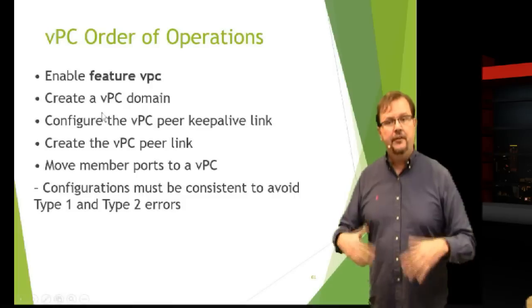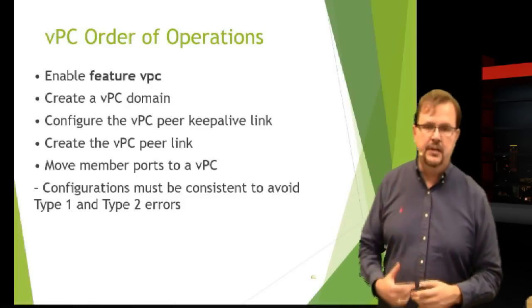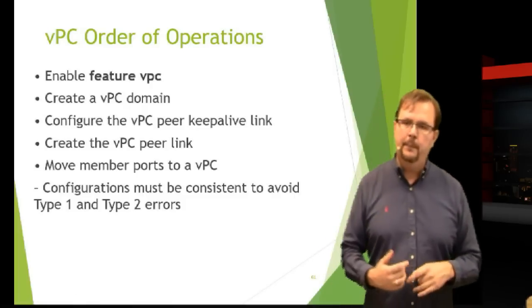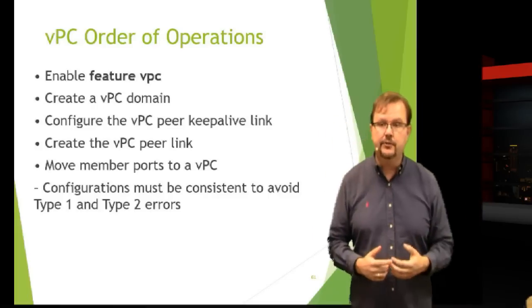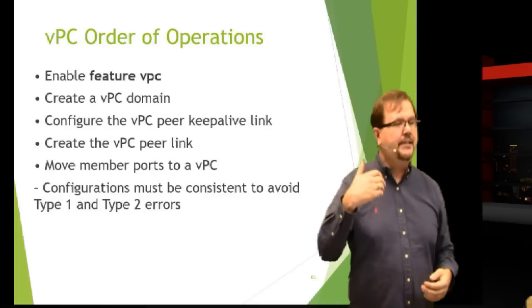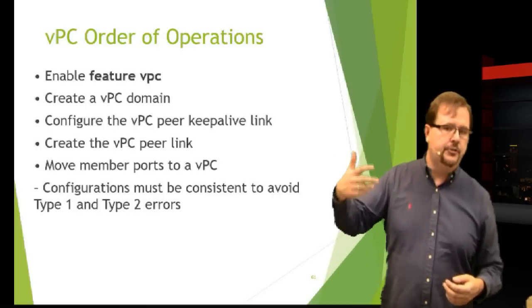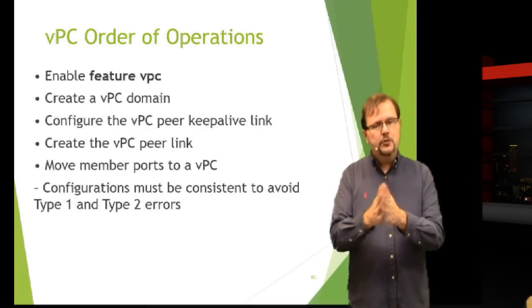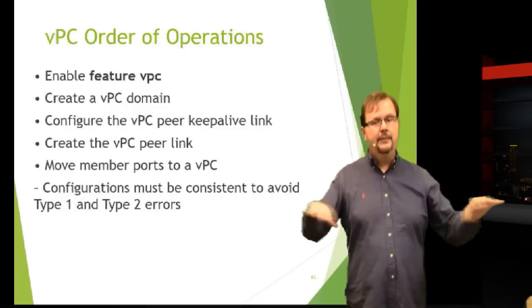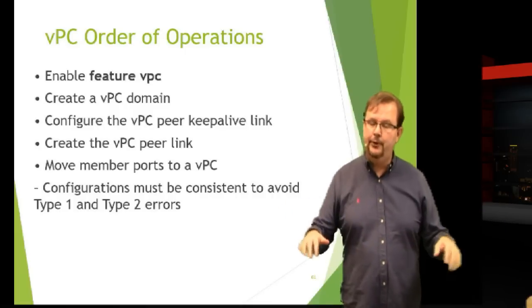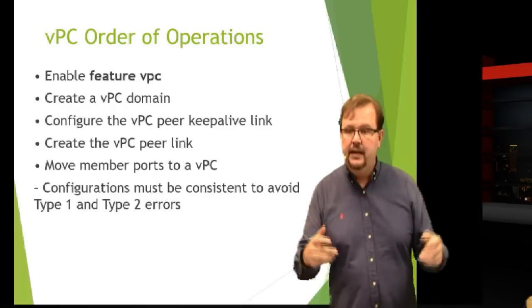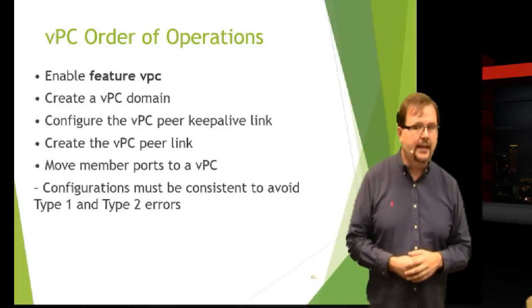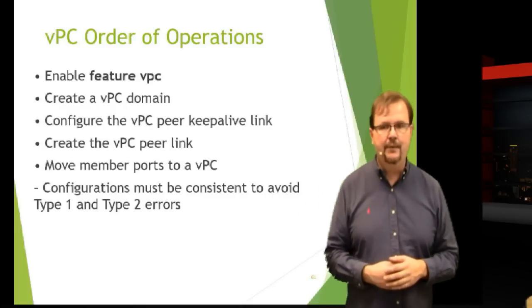So what do we do? The first thing, like anything else on Nexus, the feature is not enabled by default. So I do the feature VPC command that turns on the VPC process so it's running. We configure a VPC domain and give it an ID number - one, two, three - so that if we have multiple pairs of these running on the same segment, they're isolated from each other based on that domain. We specify our keep alive link, create the peer link, and then we put the member ports into the VPC.